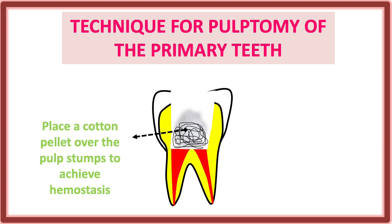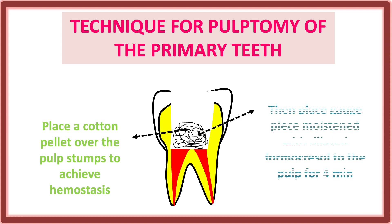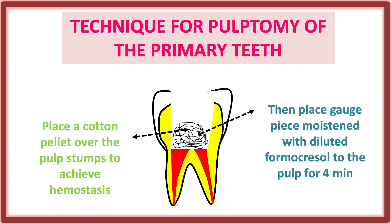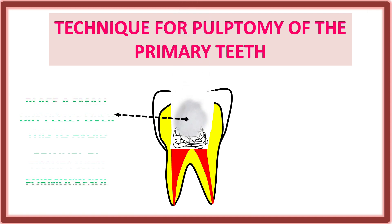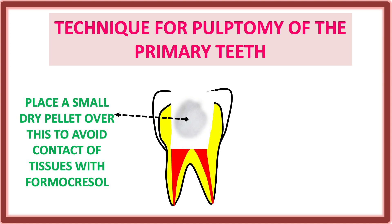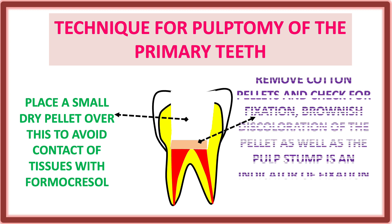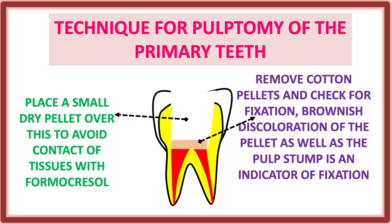Place a cotton pellet over the pulp stump to achieve hemostasis. After that, place a gauze piece moistened with dilute formocresol over the pulp for four minutes. A small cotton pellet is placed to avoid direct tissue contact with formocresol, as it can cause burning or irritation. After removal of the cotton pellet, a brownish discoloration is expected.